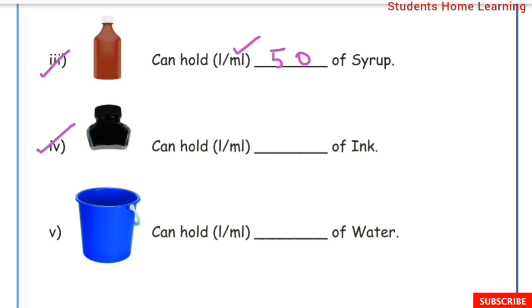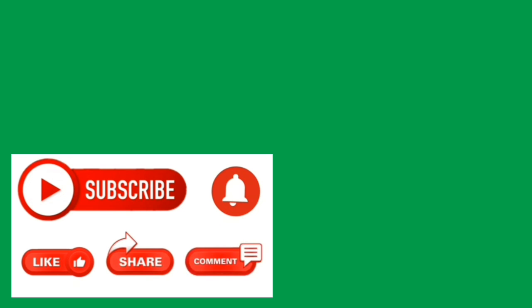4. Ink bottle — estimated capacity is 55 ml, measured in milliliters.